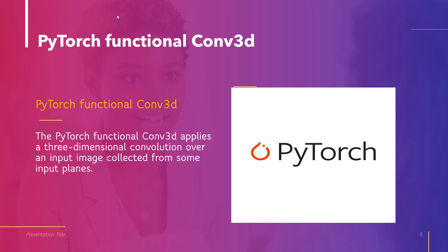Now move forward and discuss about PyTorch Functional Conv3D. PyTorch Functional Conv3D applies a three-dimensional convolution over an input image collected from some input planes. The syntax is torch.nn.functional.conv3d, and within this function we use some parameters. The first parameter is input, defined as an input tensor of a given shape. The next parameter is weight, defined as a filter of a given shape. The next parameter is bias, defined as an optional bias tensor, and the default value of bias is none.